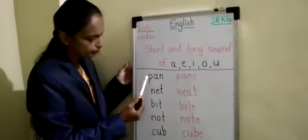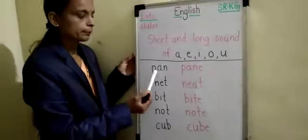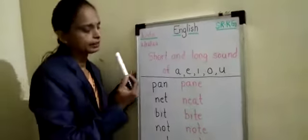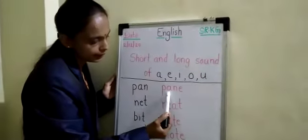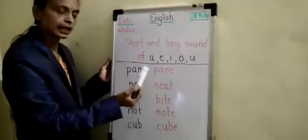Now, look at this first word. P, A, N, PAN. PAN is a short sound of A. P, A, N, E, PANE. PANE is a long sound of A.